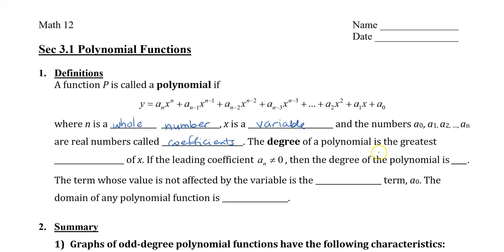The degree of a polynomial is the greatest exponent of x in the whole equation. If the leading coefficient aₙ does not equal zero, then the degree of the polynomial is n — the same as the largest exponent. The term whose value is not affected by the variable is called the constant term; it doesn't have a variable, so it is constant. The domain of any polynomial function is always all real numbers.